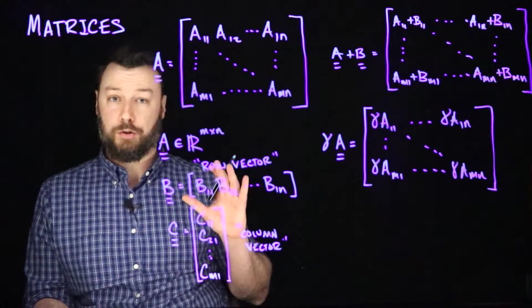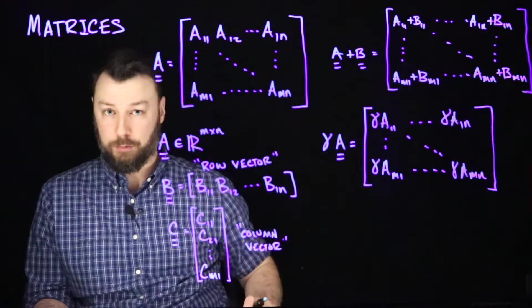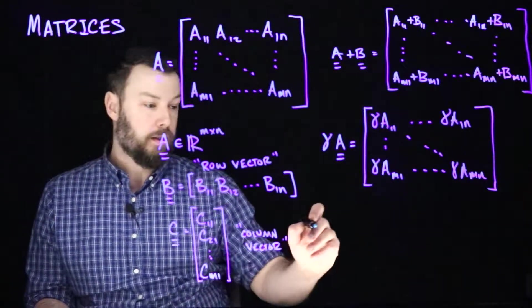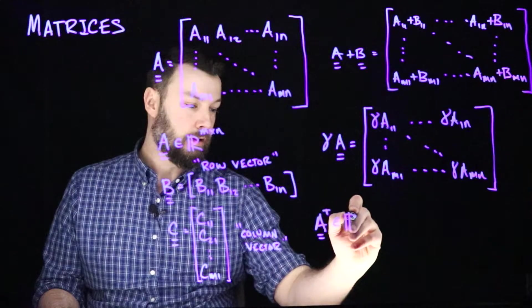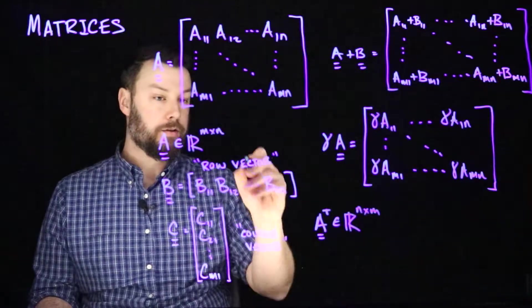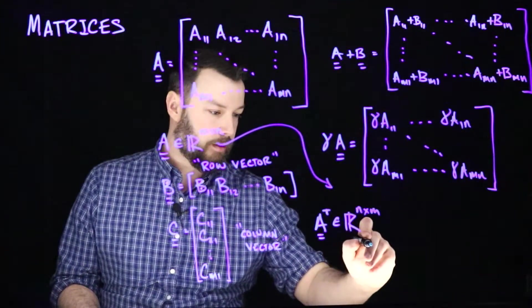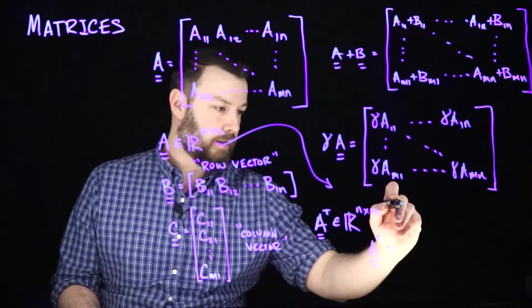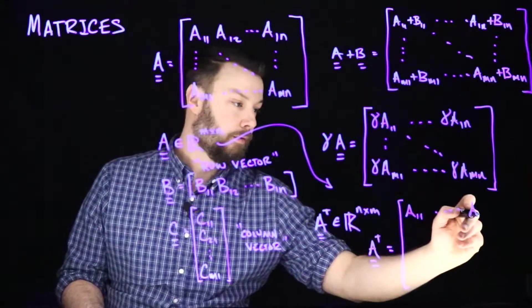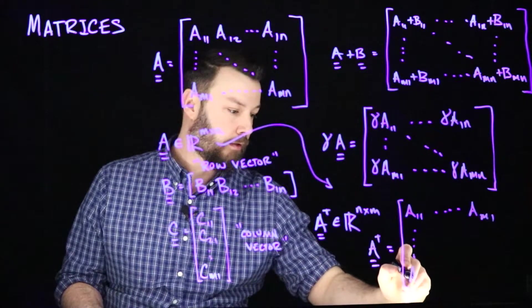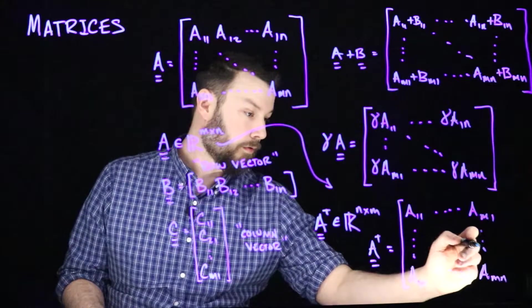One thing we often do with matrices is transpose them, a thing that makes sense because they're tables of numbers. When it's transposed, we're flipping the table so that rows become columns and columns become rows. If A is in R M times N, then A transpose is in R N times M. We're writing each of the entries in the opposite indexing scheme. We still have A11 up in the corner, but now when we go all the way over here, we have AM1. And down here, we have A1N, and then down here we still have AMN.